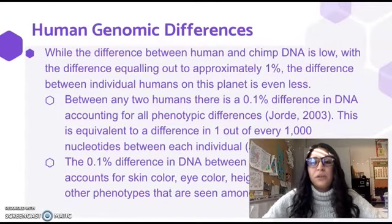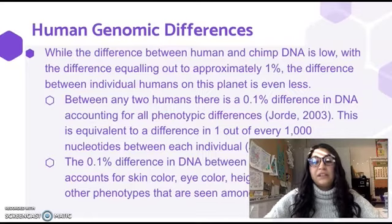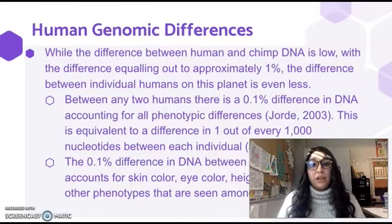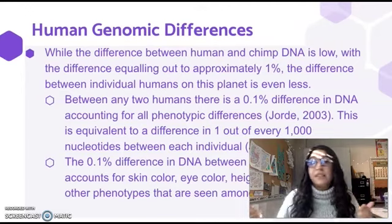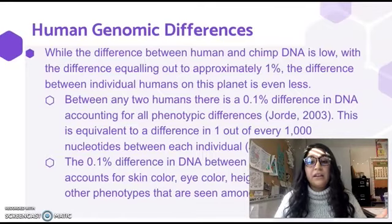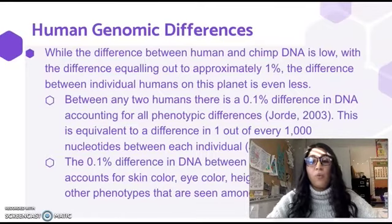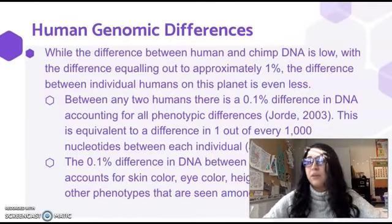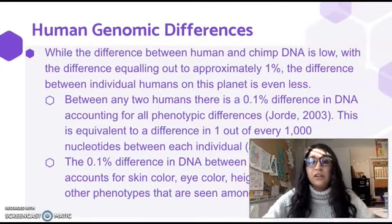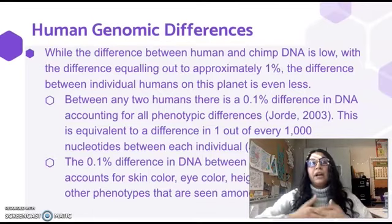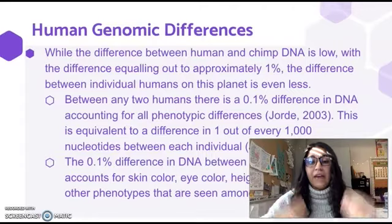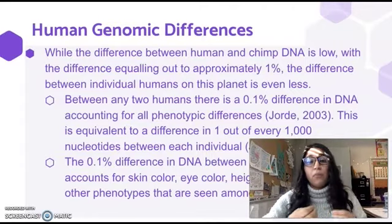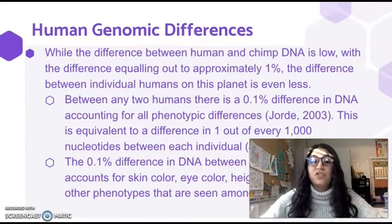While the difference between humans and chimps is about 1%, think about how different we look from one another. The difference between any two humans on the street is actually about 0.1% in DNA — equivalent to about 1 of every 1,000 nucleotides being different. We display an array of different colors, heights, and genders, and all of that difference is accounted for by just 0.1%.